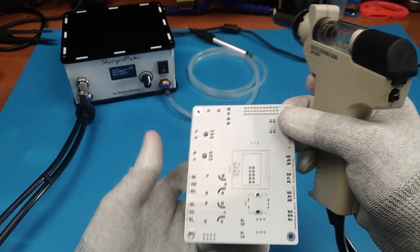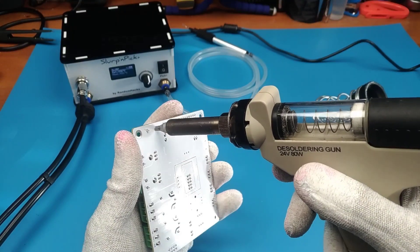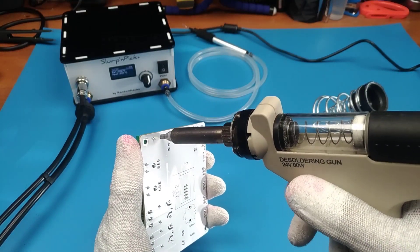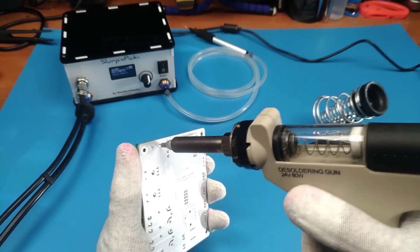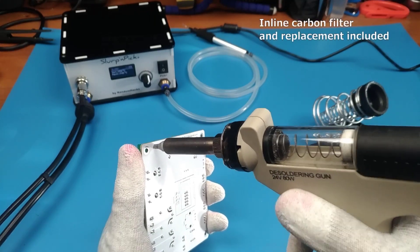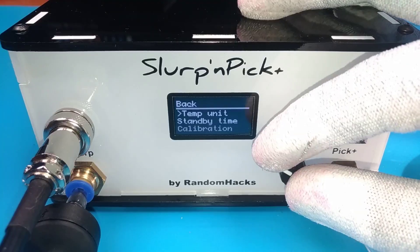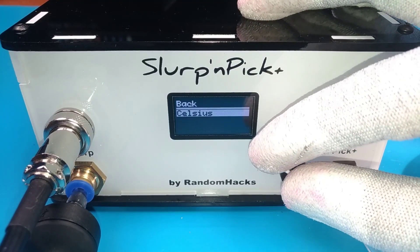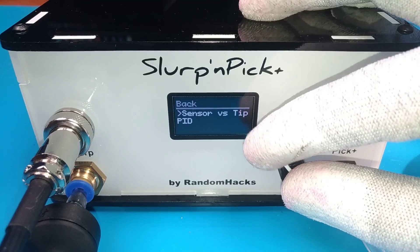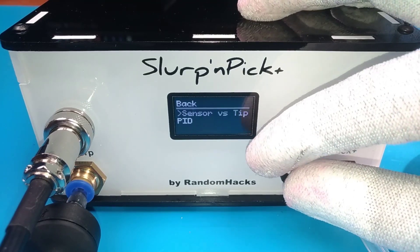The desoldering gun is a must-have tool for every electronics maker or professional that allows you to easily remove through-hole components from PCBs, making repairs and modifications a breeze. The temperature unit can be changed between Celsius and Fahrenheit and advanced settings are available for expert users.